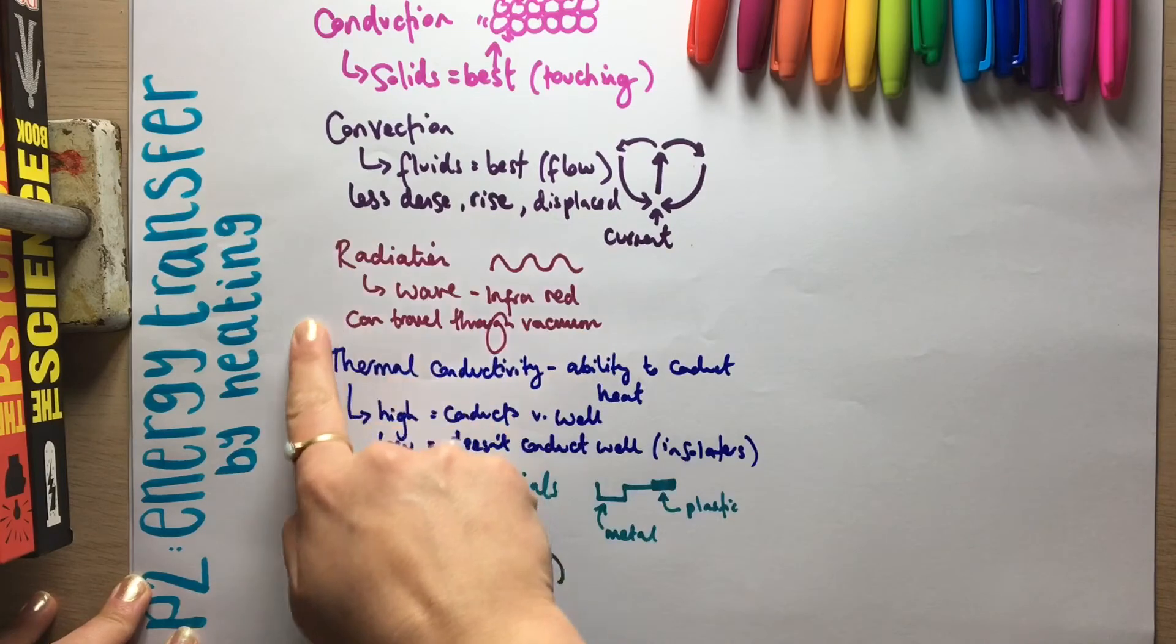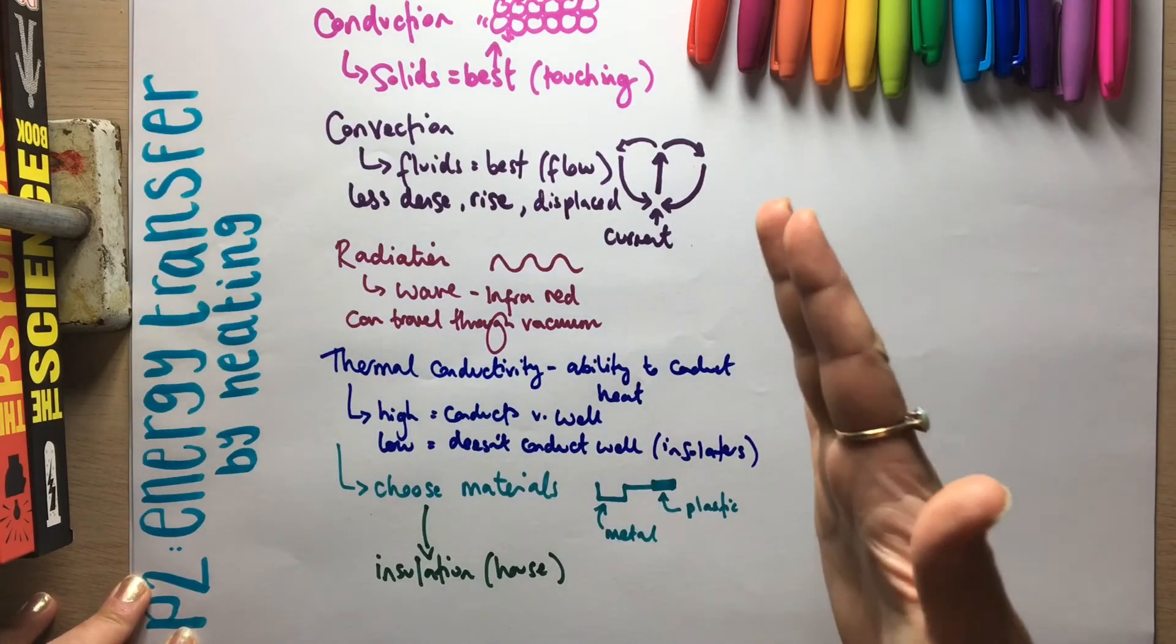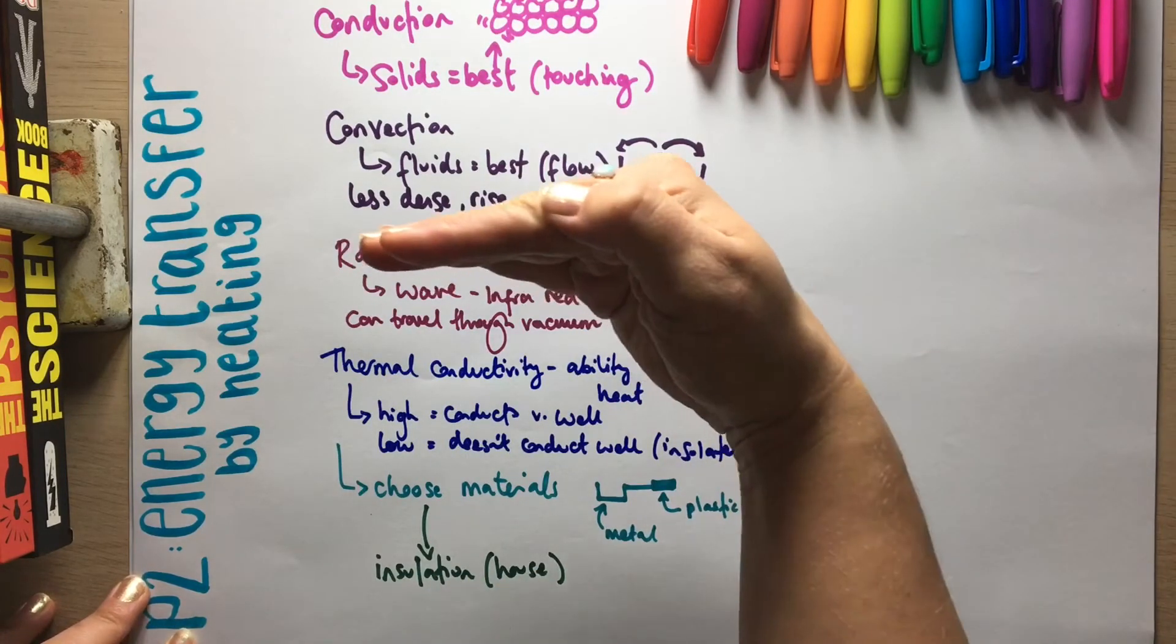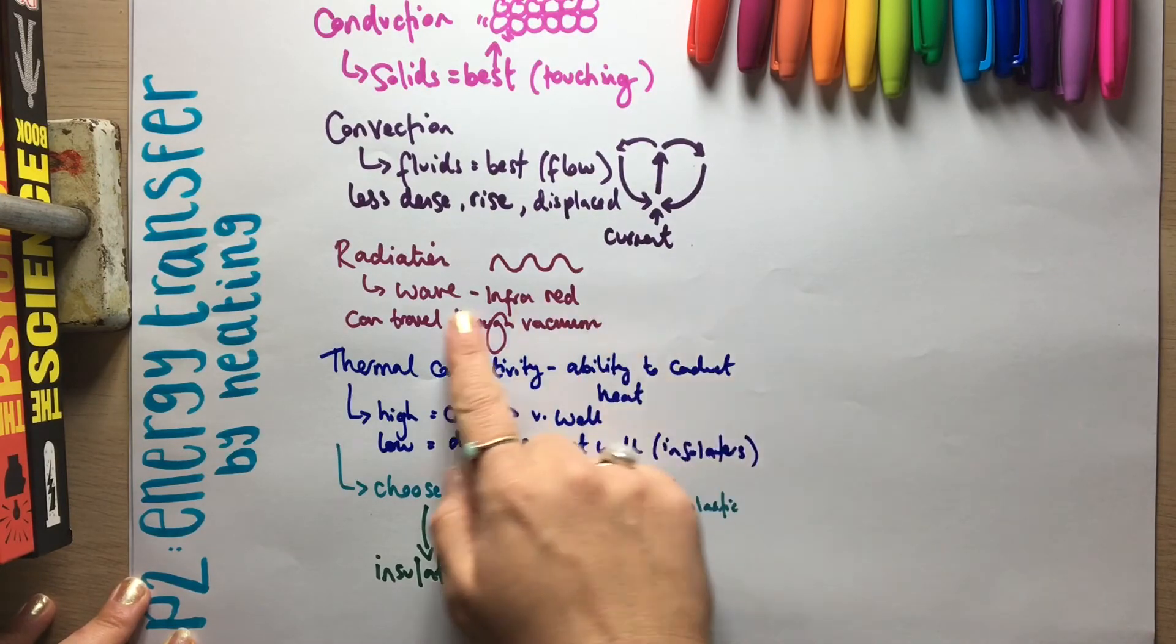So radiation is where you'd put like foil behind the radiators so that it reflects the wave back into the room.